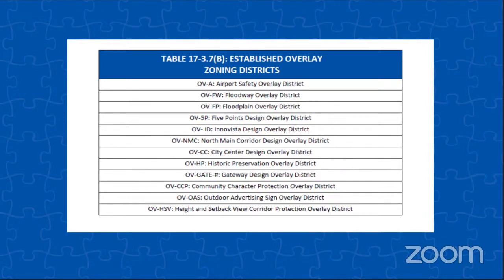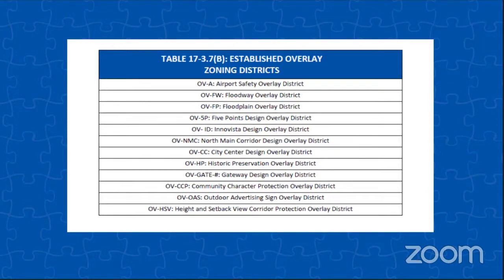There is also what we currently call DP overlay districts or design preservation, which are now more logically called historic preservation overlay districts to better designate their use. The existing community character districts will be mapped in the same location, in various neighborhoods as well. Our outdoor sign district remains, applied by council on a case-by-case basis. We currently have an airport overlay district, but it is more in the text as opposed to a map — so this will actually show the airport safety overlay district. We also have our floodway and floodplain districts, which in essence regulate what the FEMA maps show.